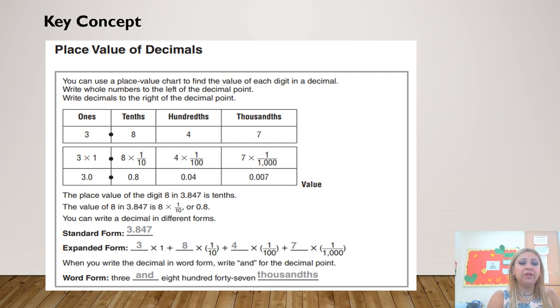For example, if I want to read this number, I am going to read it as three and eight hundred forty-seven thousandths. Don't forget to end your number with the word thousandths or hundredths or tenths. And remember that you are going to read the decimal point as 'and.' And this is called the word name or the word form. It's the way you read the number.